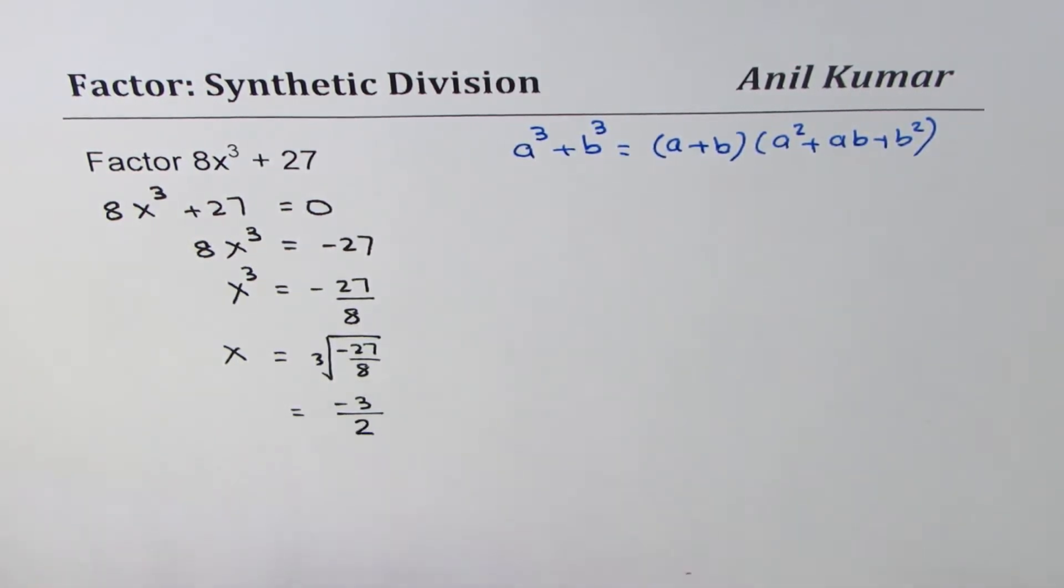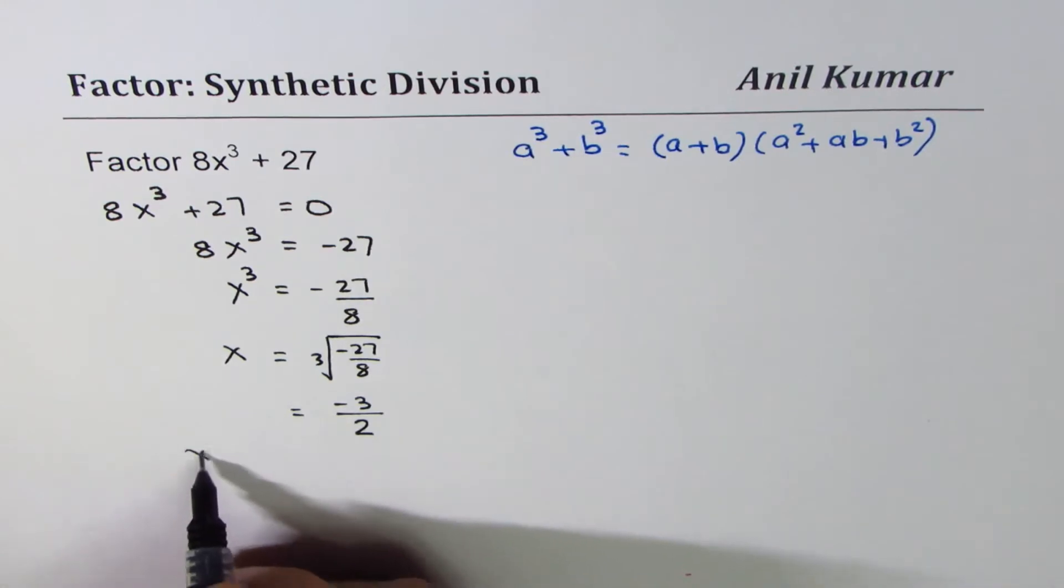Cube root of -27 is -3, and that of 8 is 2, so we get a value x = -3/2 which will make this function 0. That means x + 3/2 is a factor.